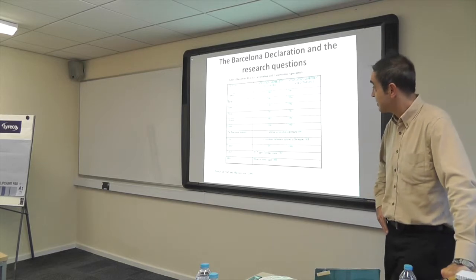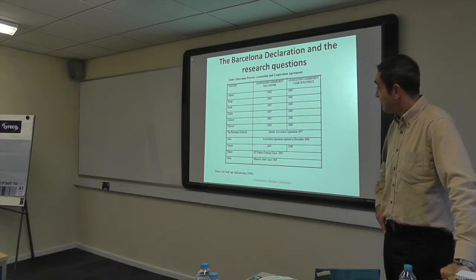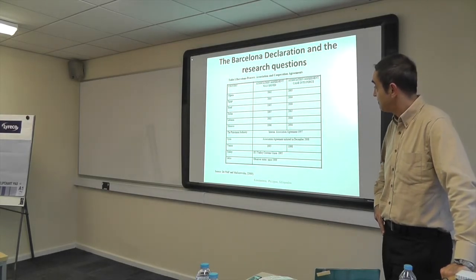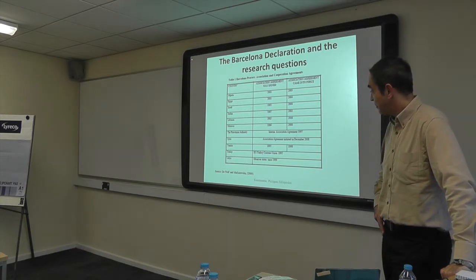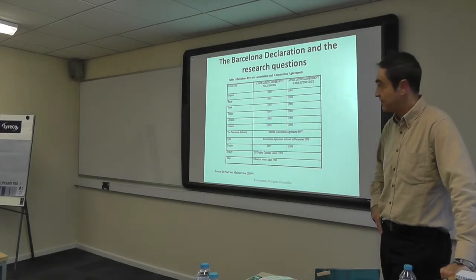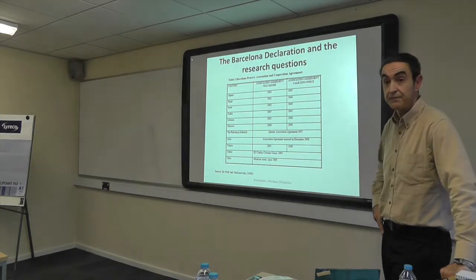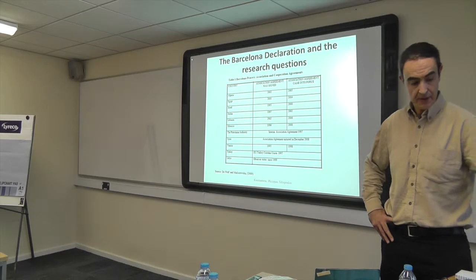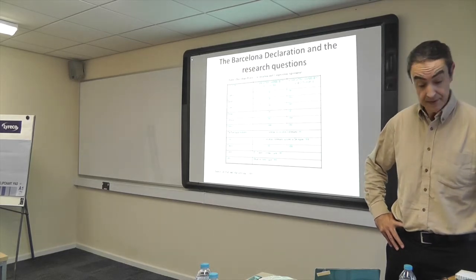This shows what the agreement timeframes looked like — when they were signed and when they came fully into force. Some of them, like Algeria, had something like a three-year lead time, or in Tunisia, some were very quick to materialize, like with Turkey, and some never materialized. Some are still in negotiations. There is a big divergence between alternative countries and how this Barcelona process proceeded with the agreement.